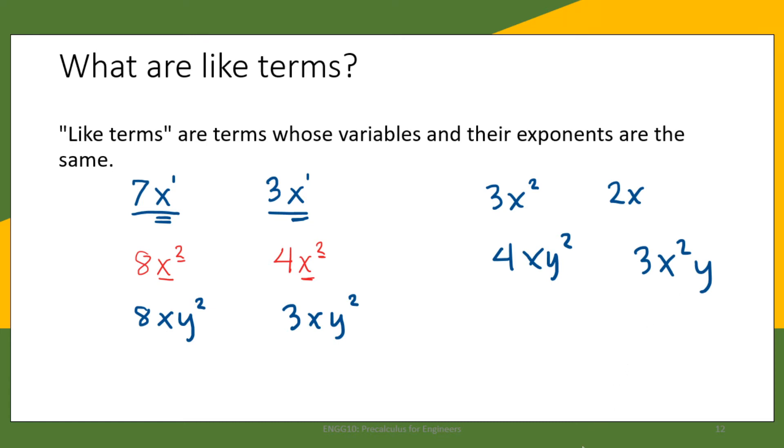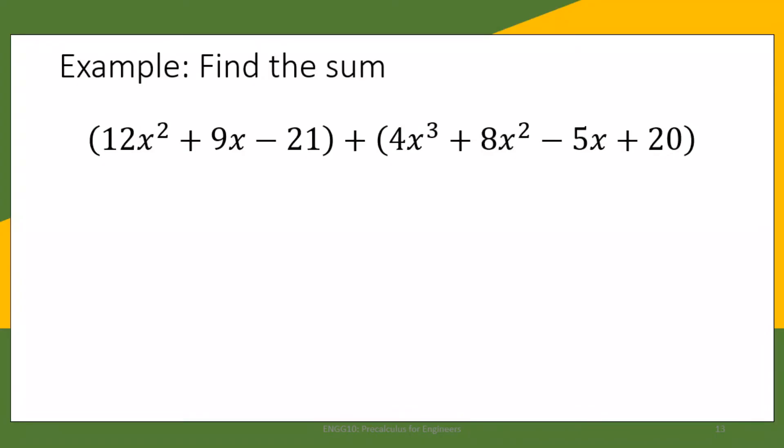In our next slide, we are going to talk about how to add or subtract like terms. Let us now consider the following example and add the two polynomials: 12x squared plus 9x minus 21, and 4x cubed plus 8x squared minus 5x plus 20.